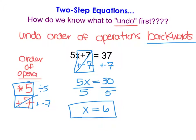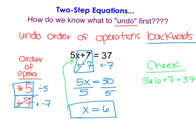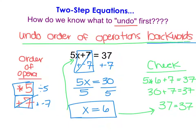If you're a little skeptical, you can always check your answer by plugging this value back into the original equation. So we have 5 times 6 plus 7 = 37. Applying the order of operations: 30 + 7 gives me 37. So x = 6 does make the equation true. The best way to solve these is by undoing the order of operations backwards — list the operations on the variable side, then undo them in reverse.